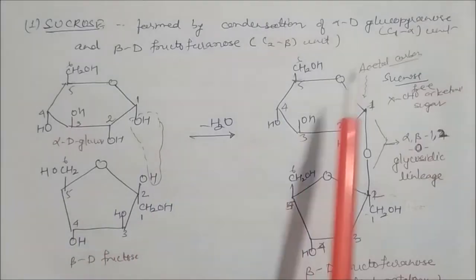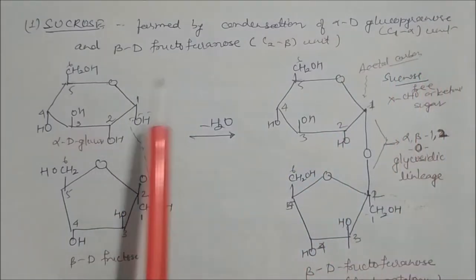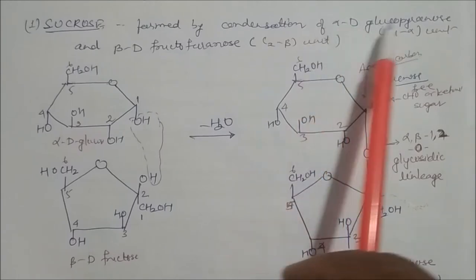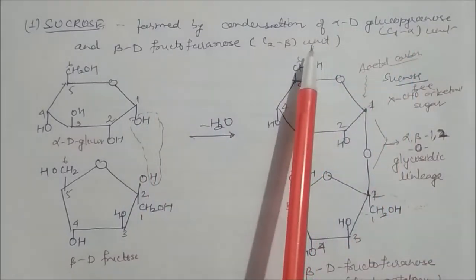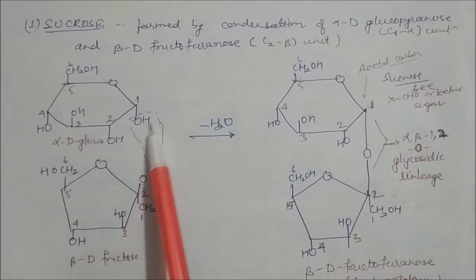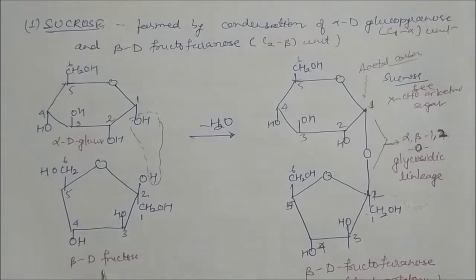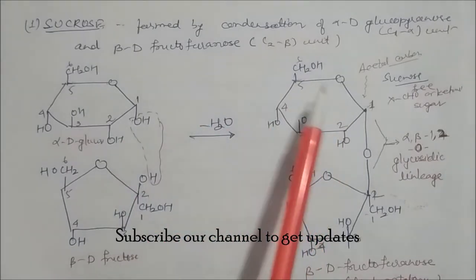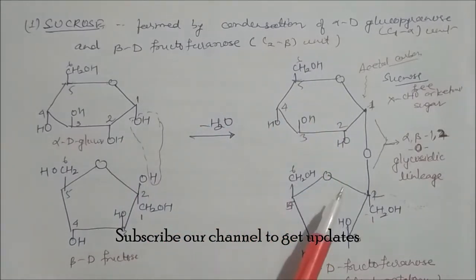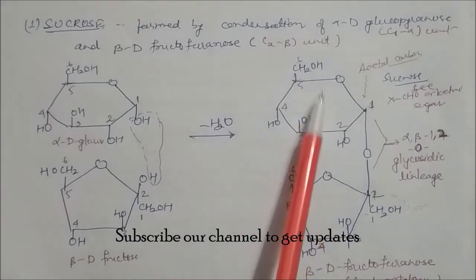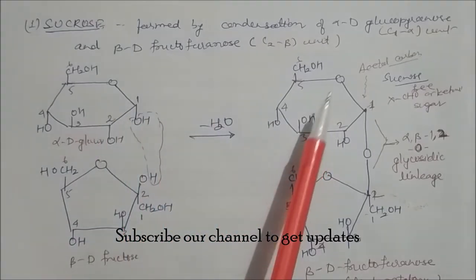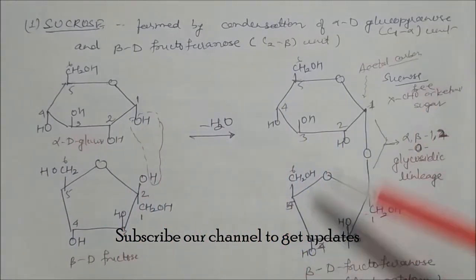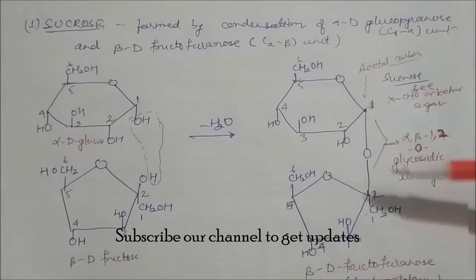Sucrose is formed by condensation of alpha-D-glucopyranose and beta-D-fructofuranose. The alpha-D-glucose has the anomeric OH down (alpha), while beta-D-fructose has OH up (beta). They condense with loss of water. This converts the hemiacetal to an acetal. An acetal is a non-reducing sugar because it has no free aldehyde or ketone group. This linkage is called the alpha-beta 1,2 glycosidic linkage.